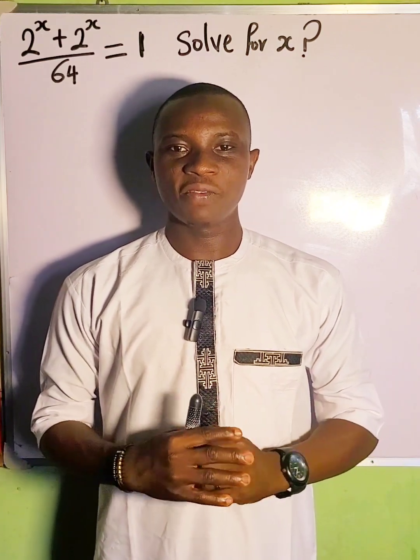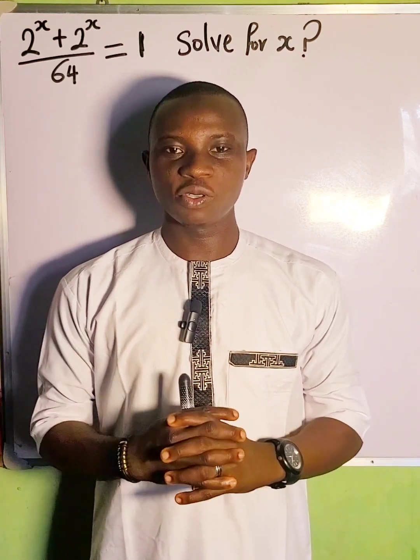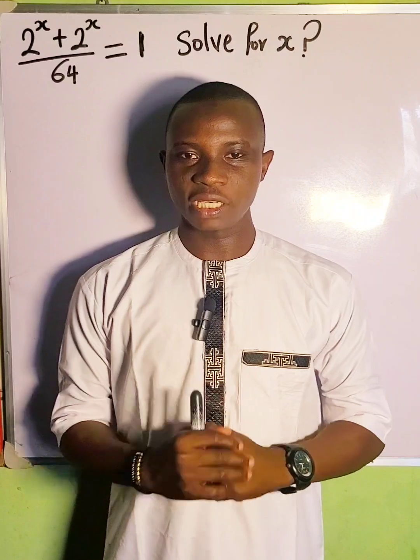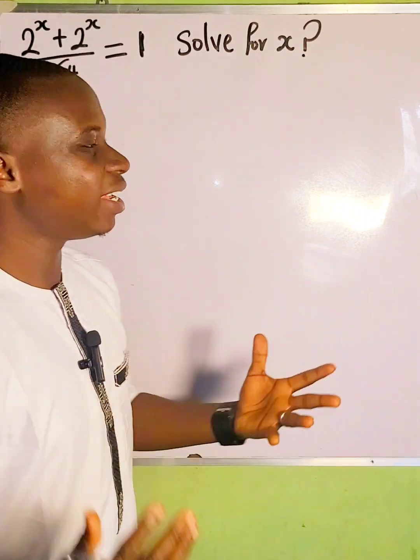If 2 to the power of x plus 2 to the power of x over 64 is equal to 1, then what is the value of x? We're going to solve for the value of x from this exponential equation.